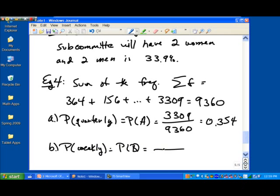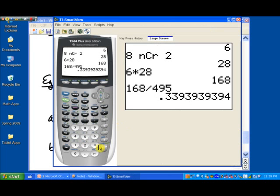That's the number of weekly periodicals we have. There were 364 of those. Divided by the total number of periodicals that were assessed. That's 9,360. So that's 364 divided by 9,360.